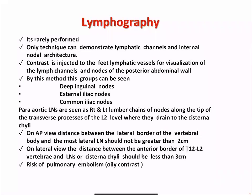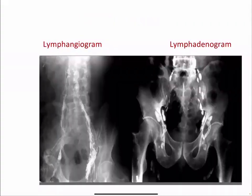By lymphangiography, the following can be seen: deep inguinal lymph nodes, external iliac nodes, and common iliac nodes. Para-aortic lymph nodes are seen as right and left lumbar chains along the tip of the transverse processes at L2 level, where they grade to the cisterna chyli. On AP view, the distance between the lateral border of the vertebral body and the most lateral lymph node should not be greater than 2 cm. On lateral view, the distance between the anterior border of the T12–L2 vertebra and the lymph node or cisterna chyli should be less than 3 cm. There is a risk of pulmonary embolism from oily contrast. A lymphangiogram shows the lymphatic carrier ducts, and a lymphadenogram shows the lymph nodes.